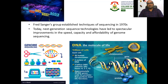Some statistics of the human genome: humans have 46 chromosomes, the total length of DNA is about 2 meters, there are 3 billion DNA base pairs, and approximately 30,000 genes code for proteins that perform most of life's functions.